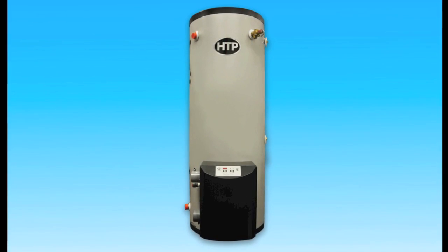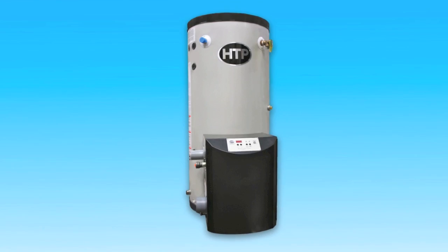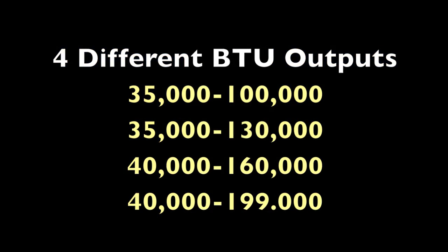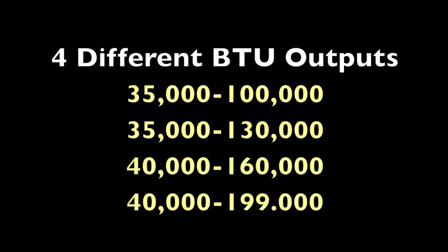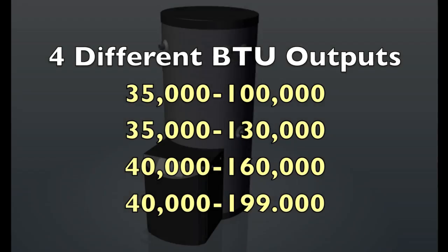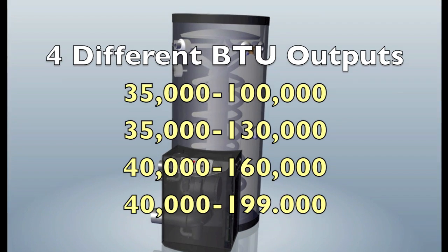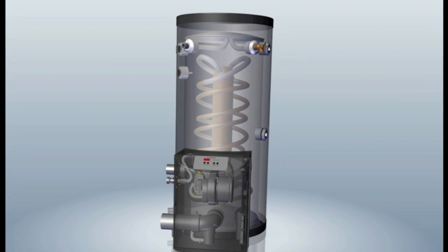All tank sizes have four input options or gas combustion power ranges. The first is 100,000 BTUs. The second is 130,000 BTUs. The third is 160,000 BTUs. And finally, the fourth is 199,000 BTU combustion system.